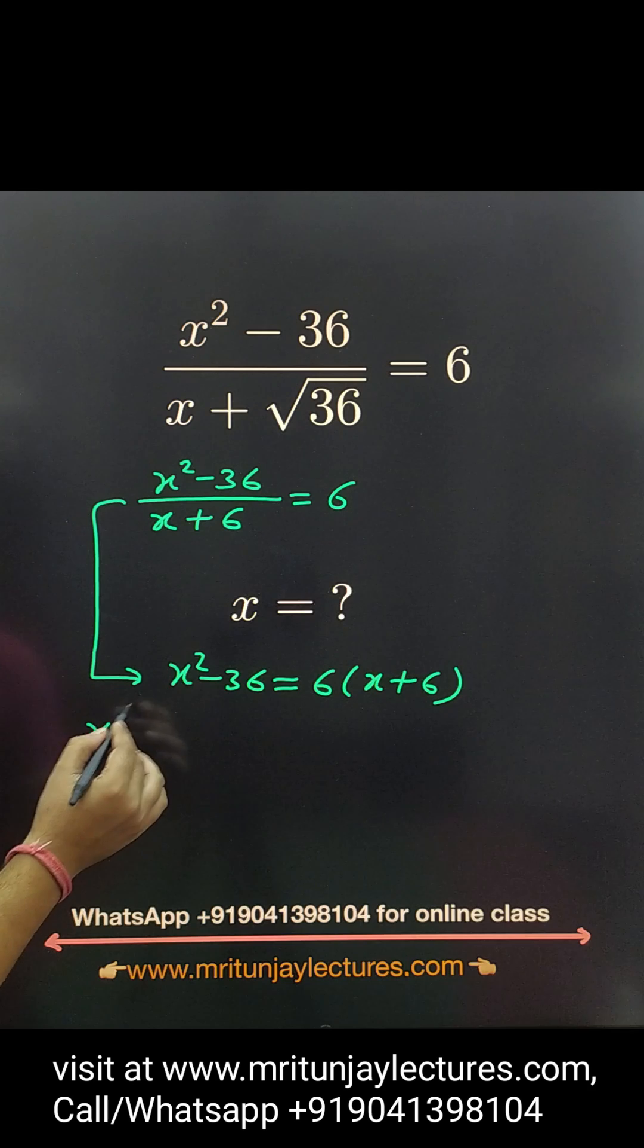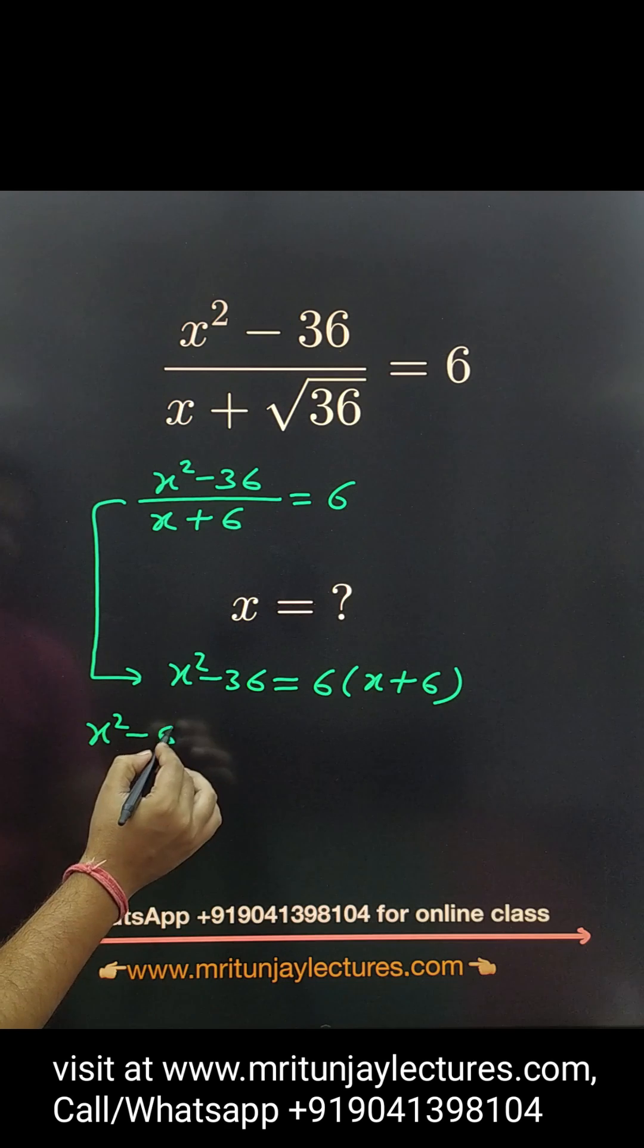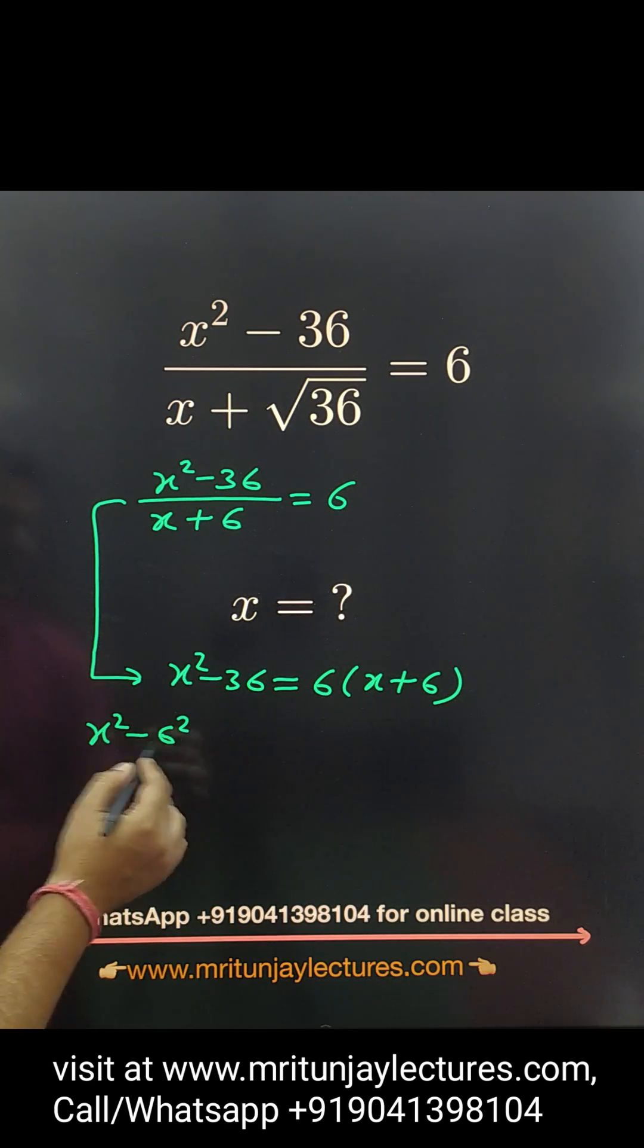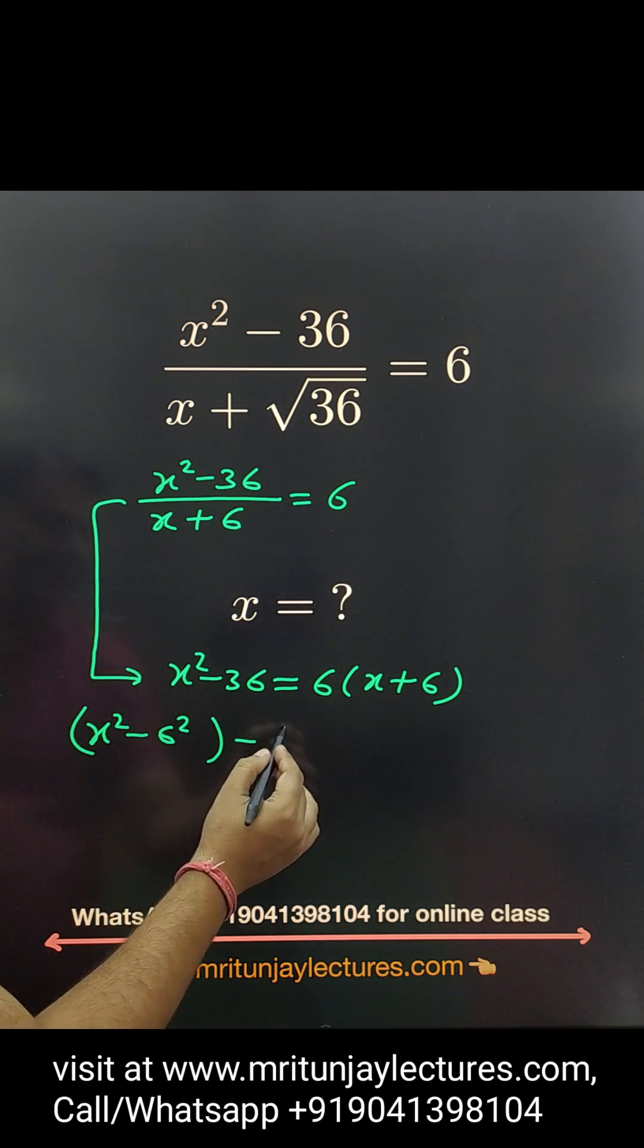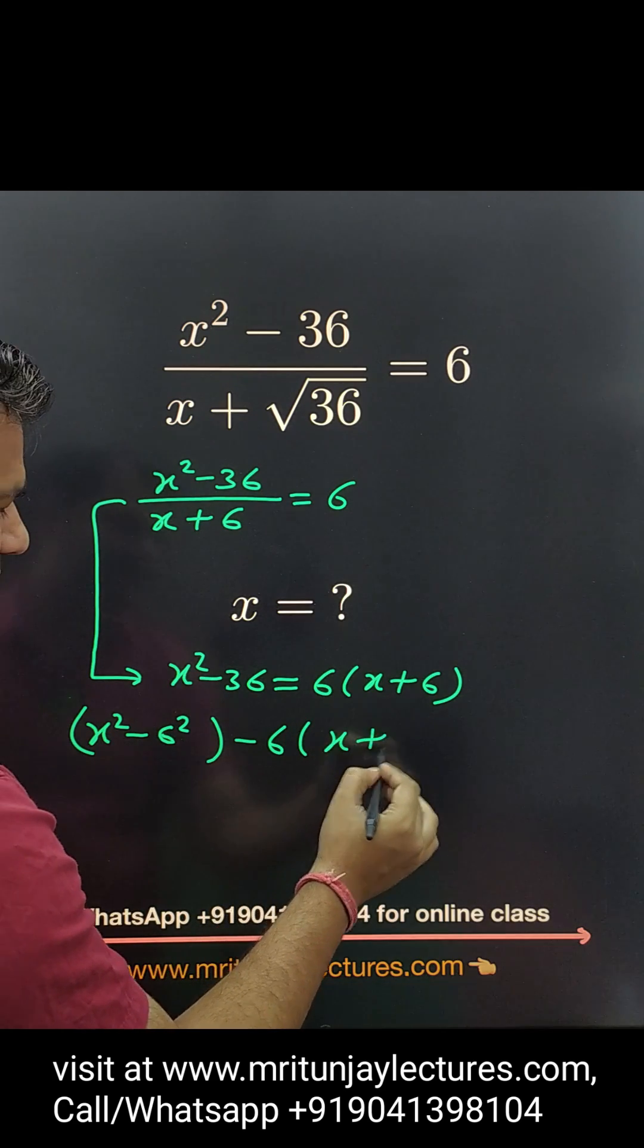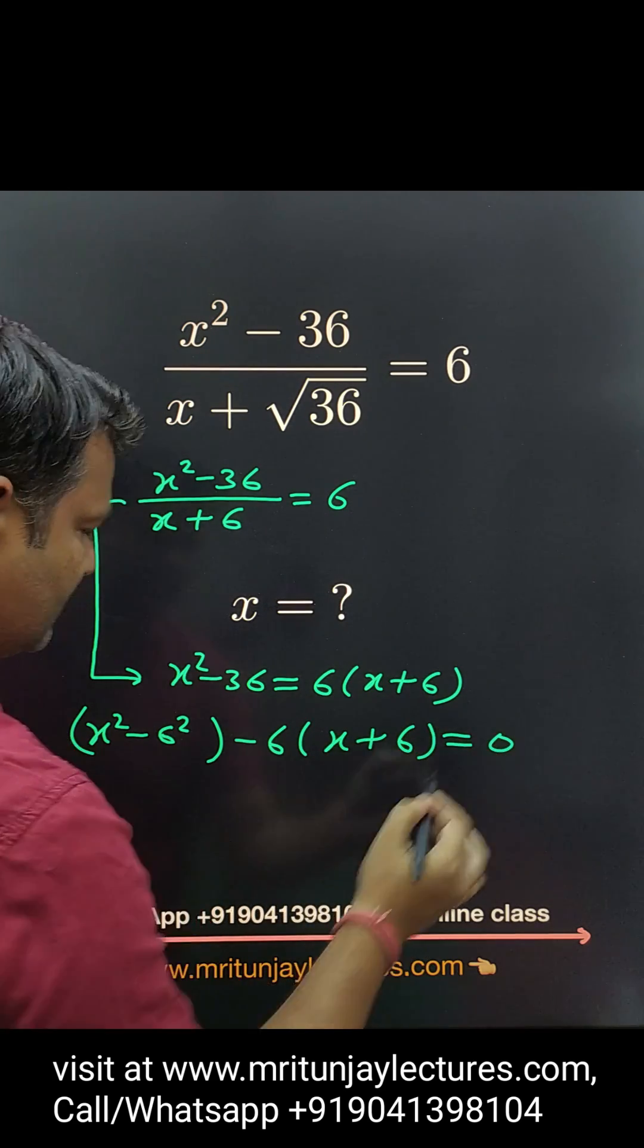Now here, this one is written as 6², and that one is 6. x² - 6² minus 6(x + 6) equals 0.